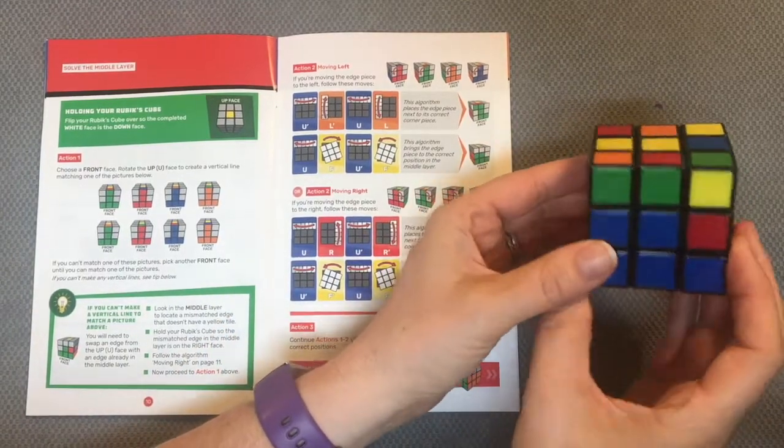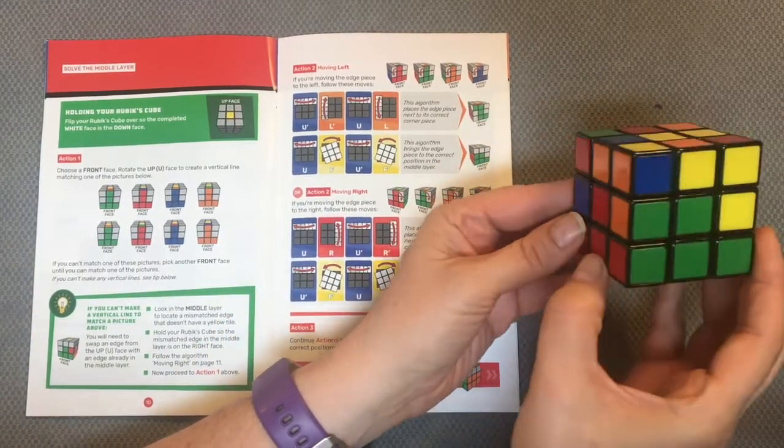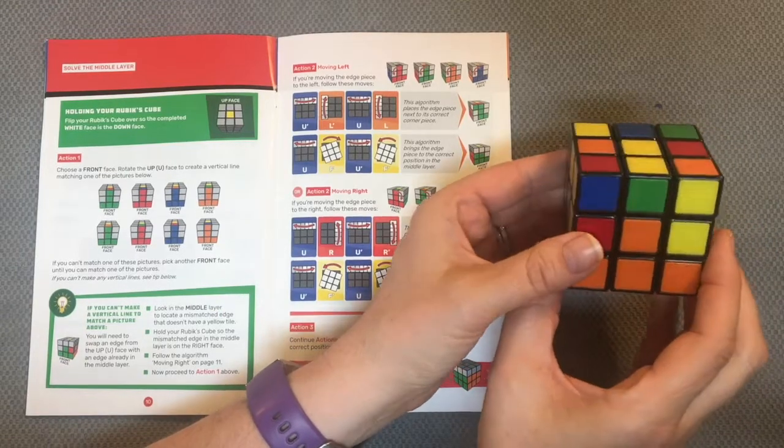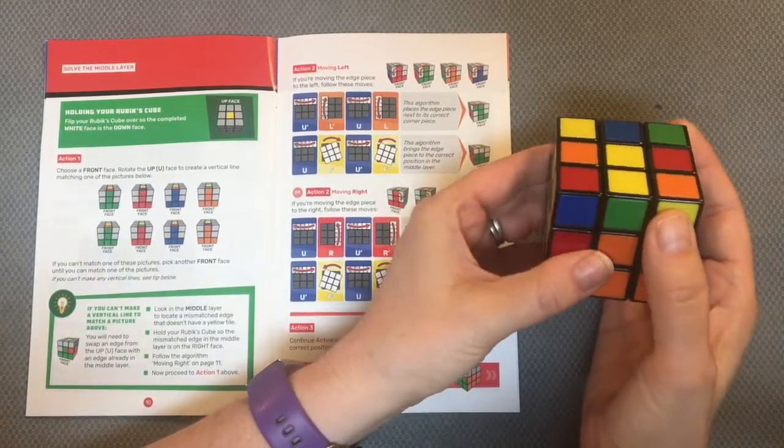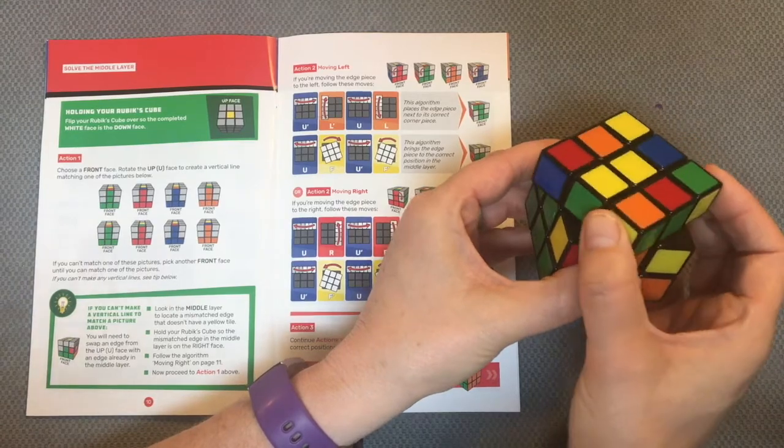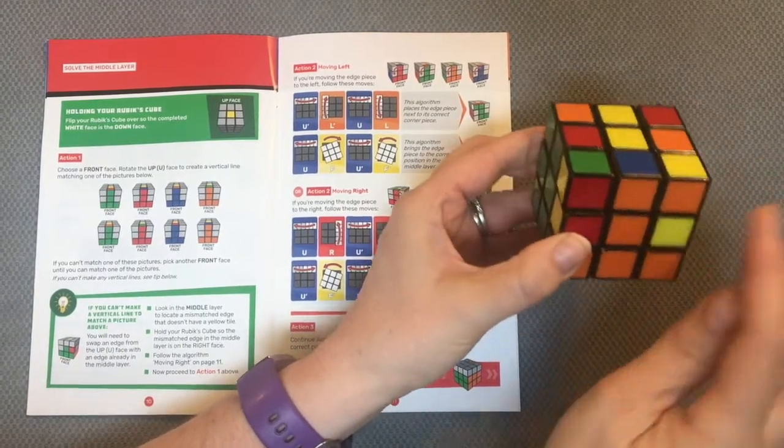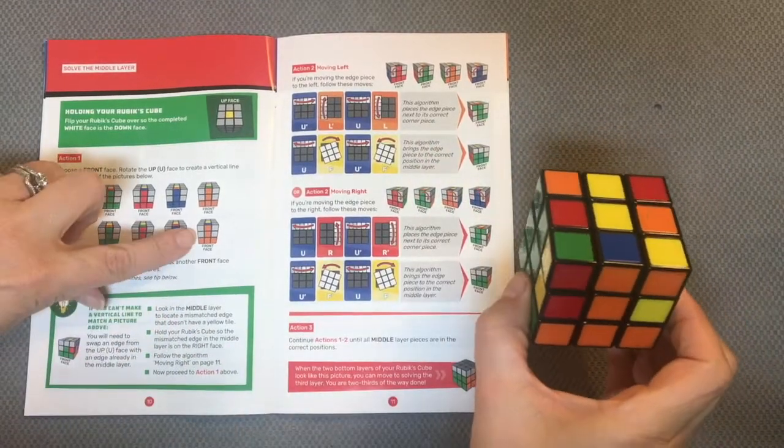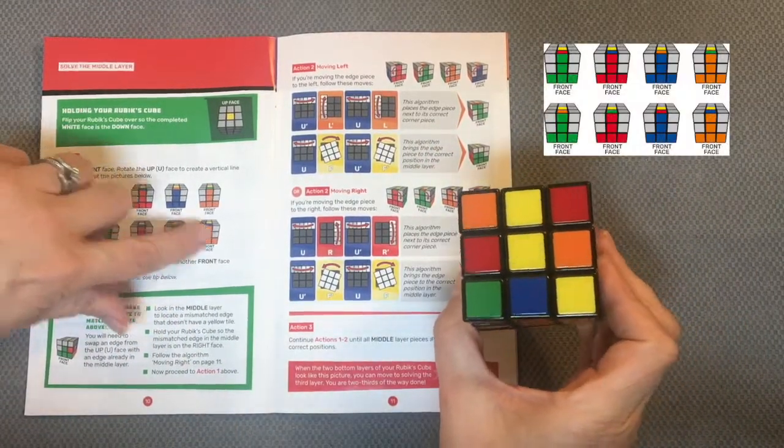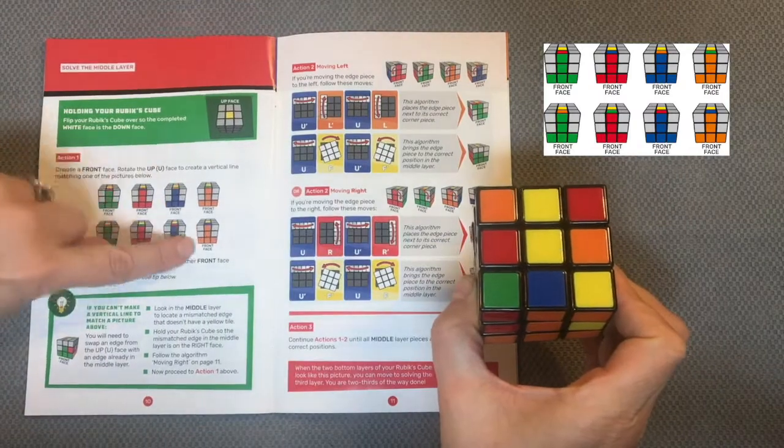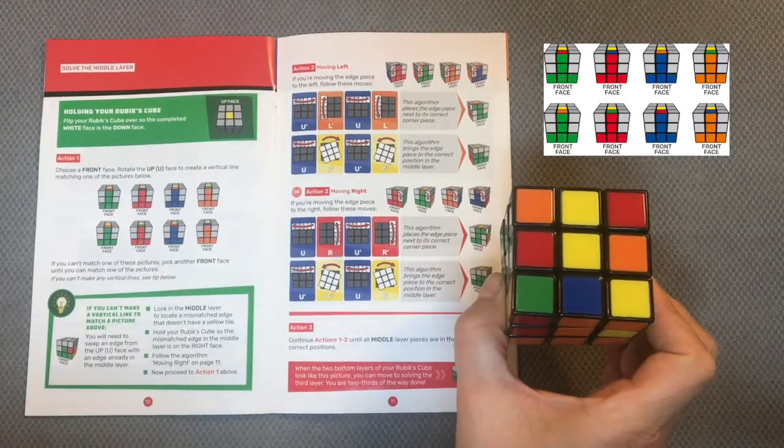In order to do that I can either rotate my cube to see if there are any already there, which I do not see, so I can now rotate the upper layer, the up face, until it matches. So here I have an orange front face and I can look here and I have two options. I have the blue on the top, so I have this bottom one. Now that I've matched that I can move on to the next step.